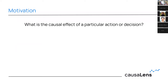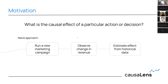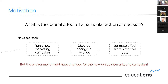The main question we want to answer is: what is the causal effect of a particular action or decision? To give an example of a naive approach, we might want to run a new marketing campaign and observe a change in revenue, then estimate the campaign's effect from historical data — comparing this year's Christmas campaign to last year's. But that approach doesn't account for the fact that the environment might have changed, which could bias our estimate.